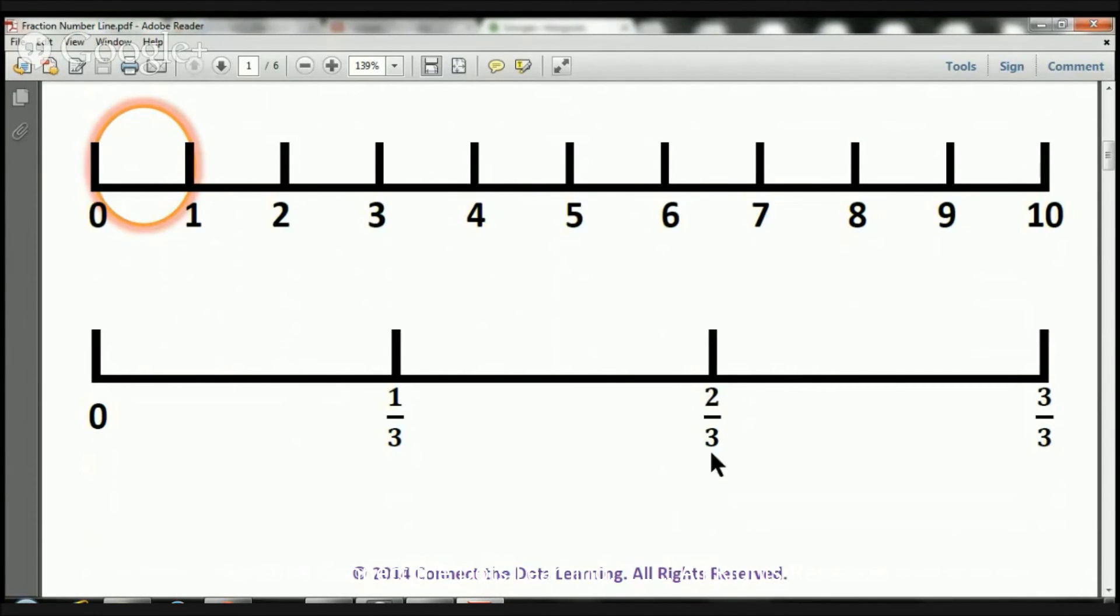Now we have two-thirds, because there's one, two pieces there. Up until this point, that's two-thirds. And now we're going to have three-thirds here, because from here, all the way here, there's one, two, three pieces. So that's going to be three-thirds. And remember,